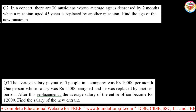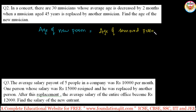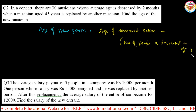Here are two direct concepts. If you want to find the age of the new member who joined, the formula is: Age of new person = Age of removed person − (Number of people × Decrease in age). The minus sign is used here because the average decreased. If the average had increased, a plus sign would be used instead.